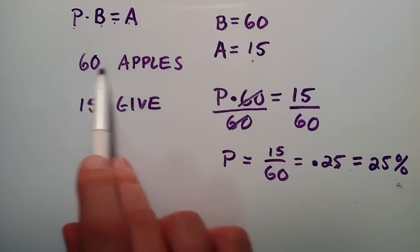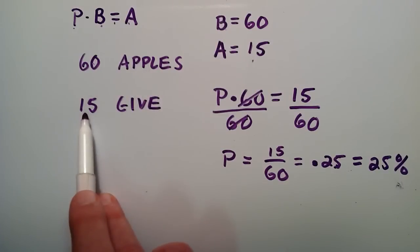So basically, if we have 60 apples to begin with and we give away 15 apples, then we gave away 25% of the apples that we started with.